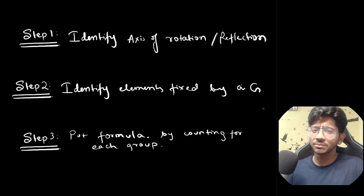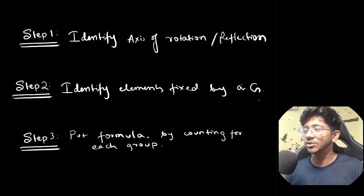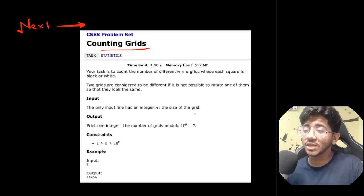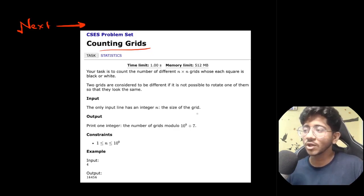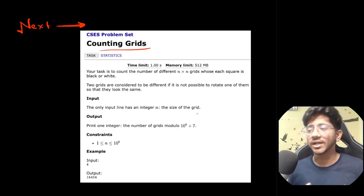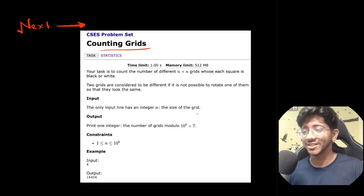This is just the first example, so don't worry if you couldn't follow everything — go back and watch again. In the next video we'll take up a problem from CSES called Counting Grids, which is again a Burnside Lemma problem, and something similar appeared in an ICPC regional. Links to all problems in this series will be in the descriptions. Try thinking about each problem using Burnside Lemma before looking at the solution. That's all for this video — see you in the next one. Bye-bye! And please do subscribe to the channel.